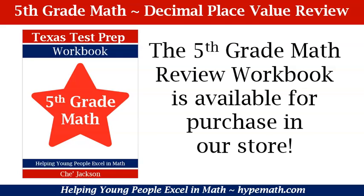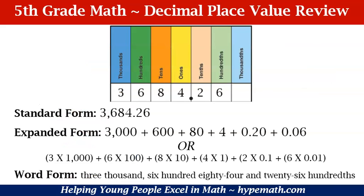Let's get started. In our example, we have 3,684 and 26 hundredths. Now let's look at our place value chart.